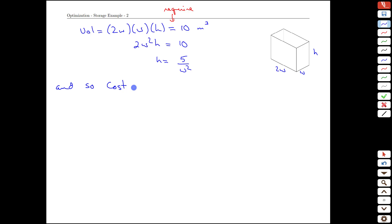And so our cost function, which is equal to 20w squared plus 36w times h. We can now replace our height with this volume constraint value. And we end up with 36w's. And then the h gets replaced with 5 over w squared. Keep going. We end up with 180 over w. We can write this as cost as a function of w.